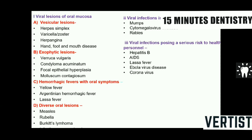Viral diseases can be classified into: viral lesions of the oral mucosa, viral infections involving salivary glands, and viral infections posing a serious risk to the health of the person. Those involving the oral mucosa can be categorized by the disease they produce — vesicular lesions, exophytic lesions, hemorrhagic fevers with oral symptoms, and diverse oral lesions.